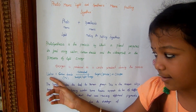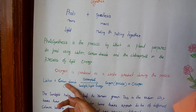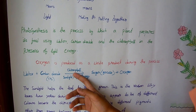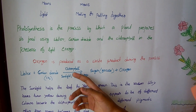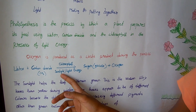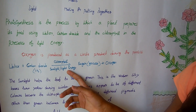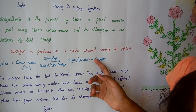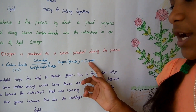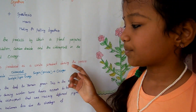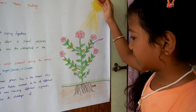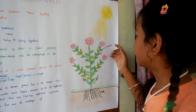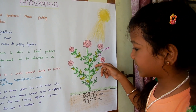For example, water plus carbon dioxide, with chlorophyll, sunlight, and light energy, forms into sugar plus oxygen to breathe. The sunlight helps the leaves to remain green.